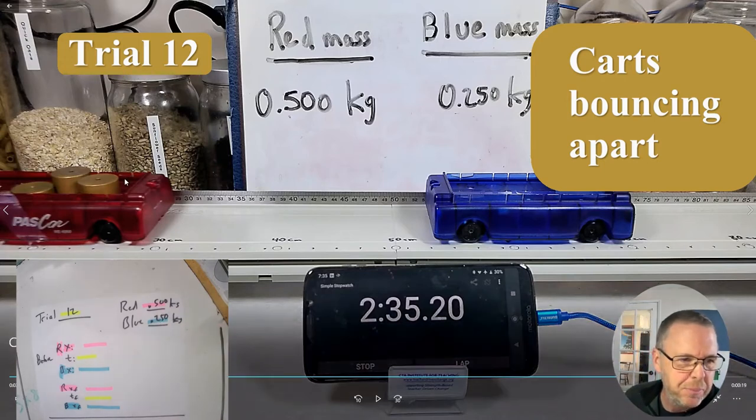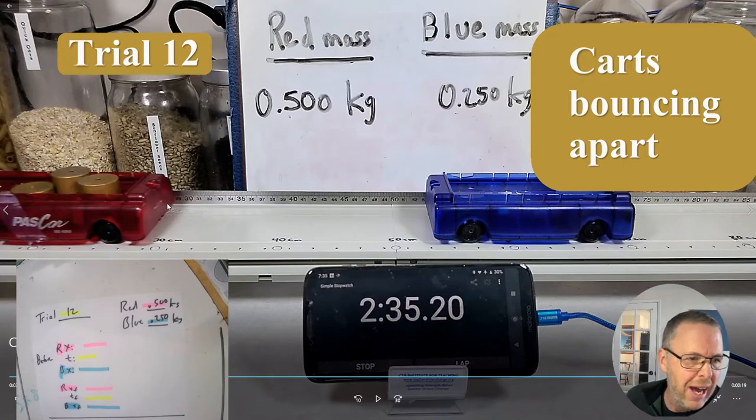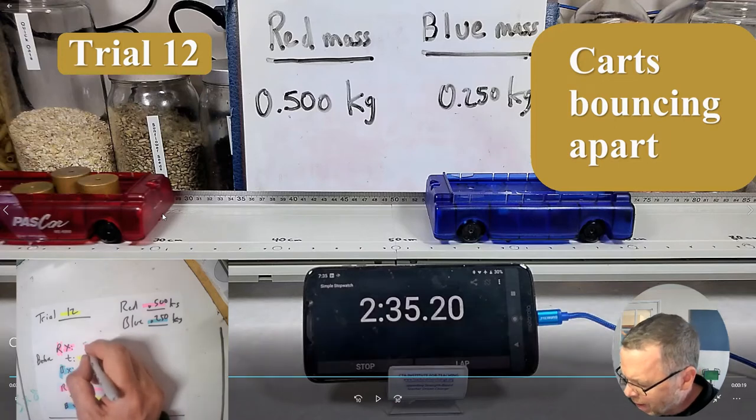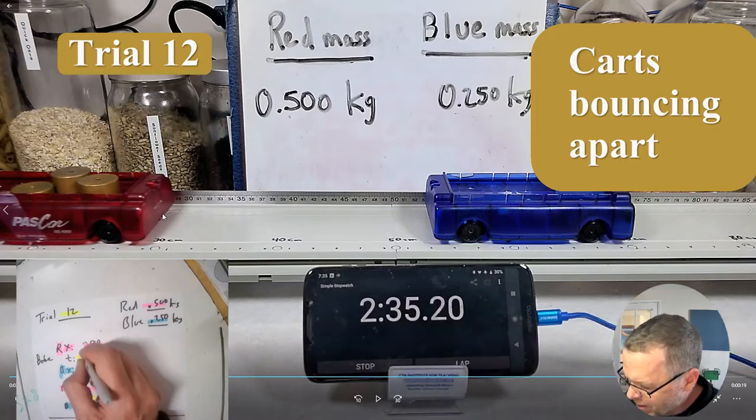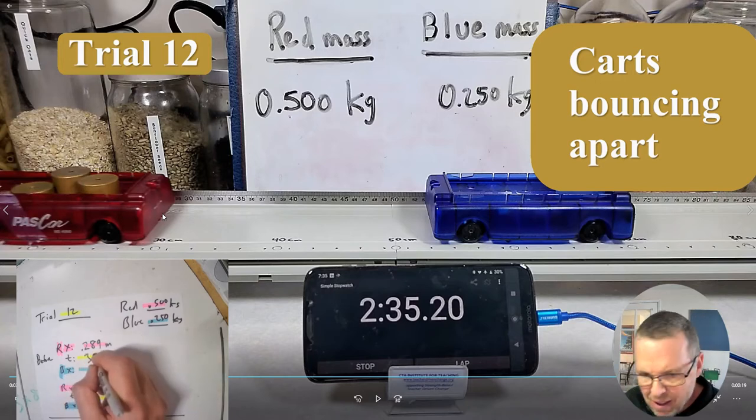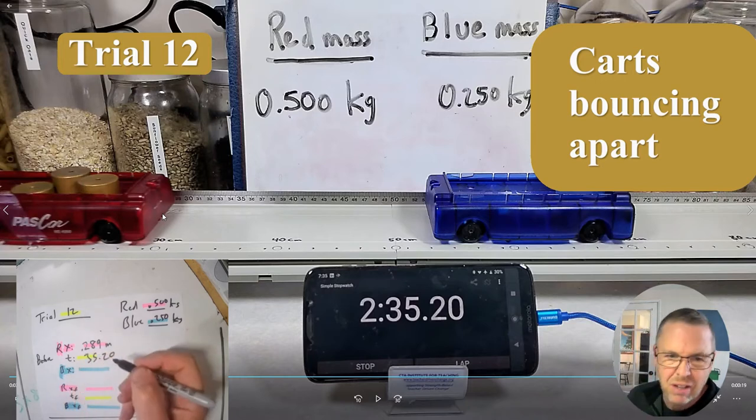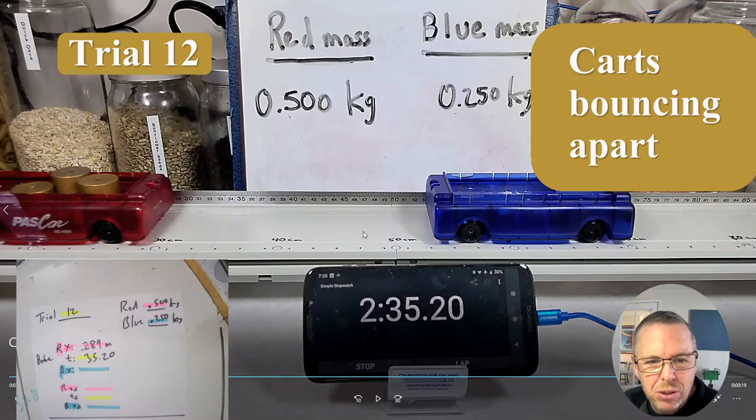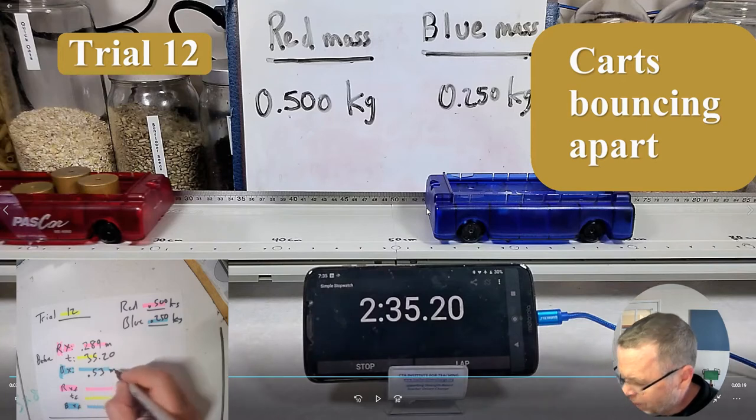And now the red car is right about at 29 I'm going to call that 28 and a half centimeters or 0.289 meters. My time is 35.20 and the blue car over here is at 53 centimeters or 0.53 meters.